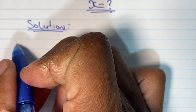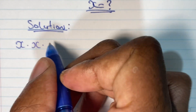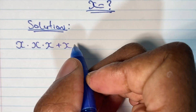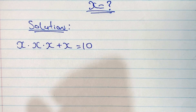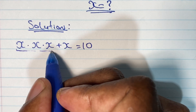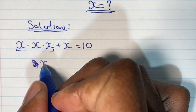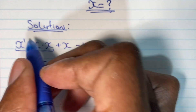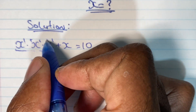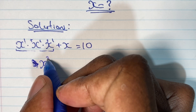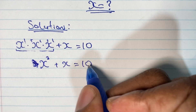Okay, let us now begin. We have x times x times x plus x is equal to 10. We have x times x times x, and we know that whenever we are multiplying powers with the same base we rewrite the base and add the powers. So we have 1 plus 1 plus 1 is equal to 3, giving us x to the third power plus x is equal to 10.